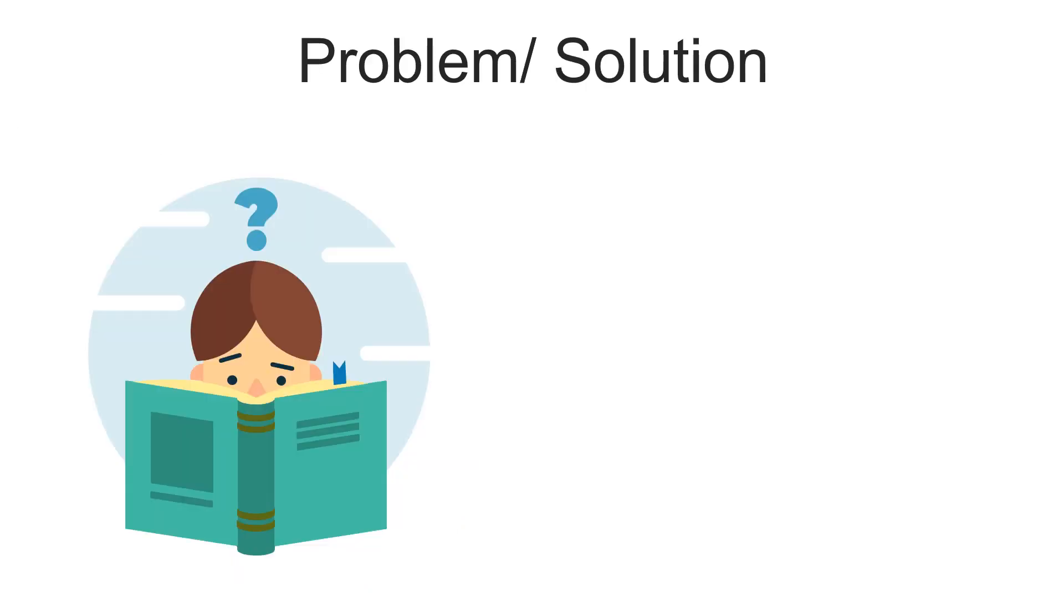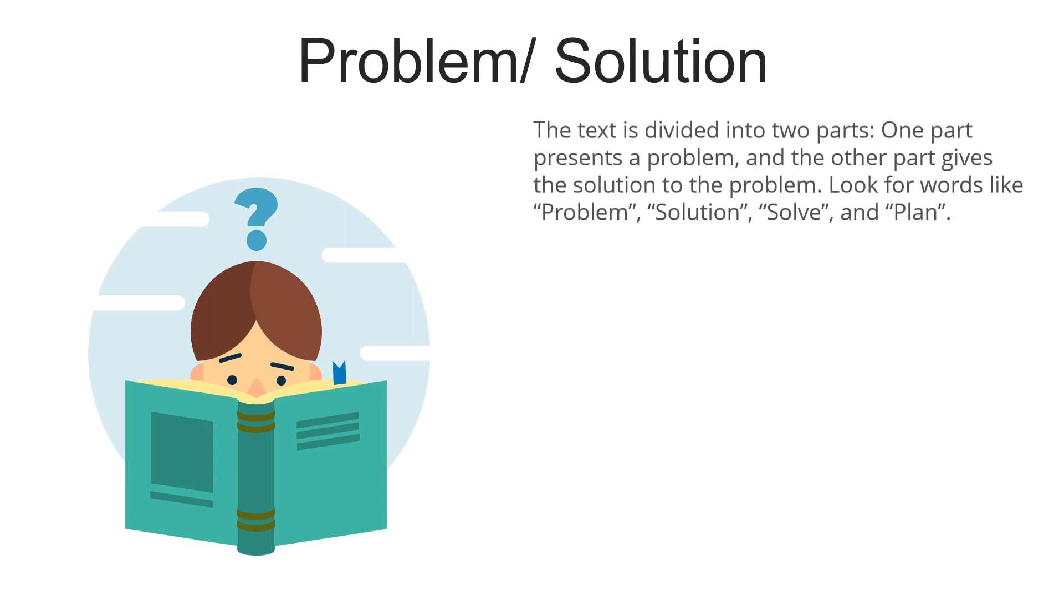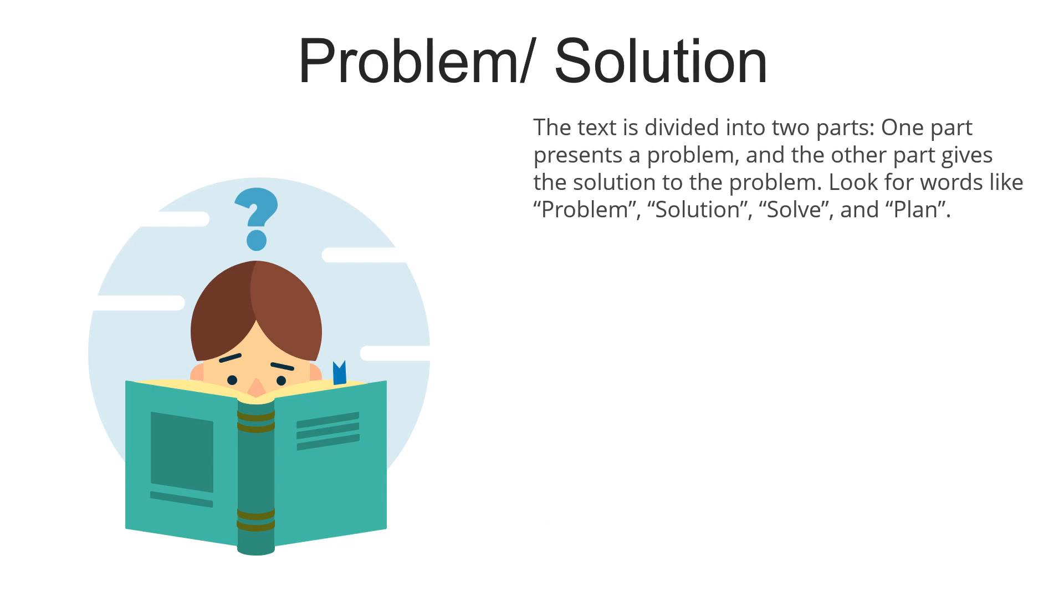And the last pattern of organization that we will be discussing is the problem and solution pattern. When a text is divided into two parts, we would know that one part is presenting a problem. We have a problem. And then, in another part, we have a solution for this problem.